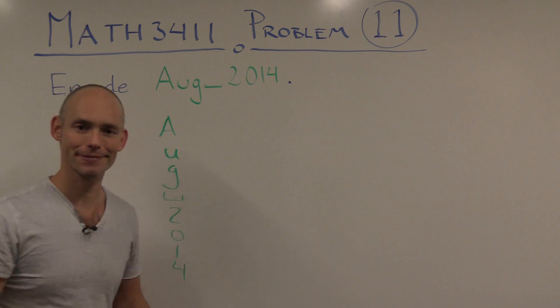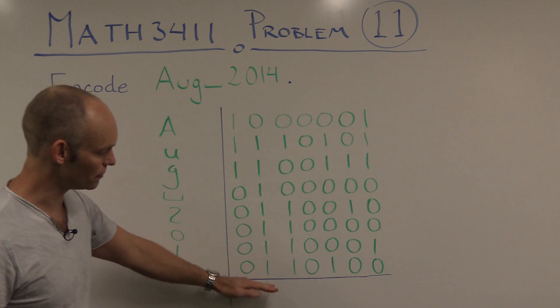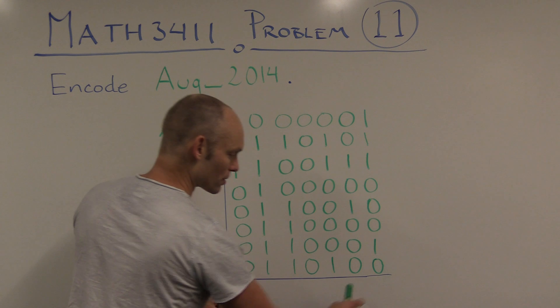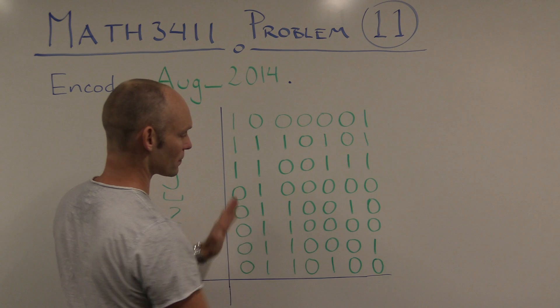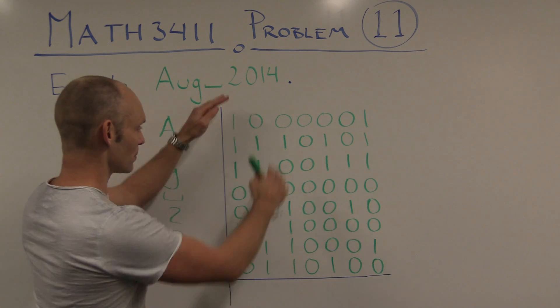What we have to do is find the checksum of these, giving us a new 7-bit string. So we just look at each of these columns here, the 7 columns, and add the numbers together.